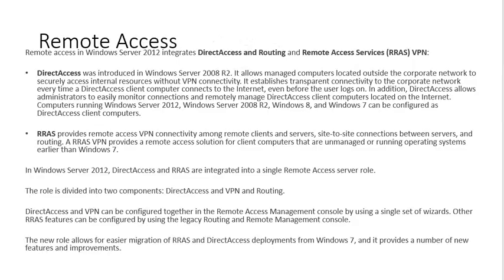For remote access in Windows Server 2012, DirectAccess and Routing and Remote Access Service (RRAS) VPN are integrated. DirectAccess was introduced in Windows Server 2008 R2, allowing managed computers located outside the corporate network to securely access internal resources without VPN connectivity. It establishes transparent connectivity to the corporate network every time a DirectAccess client computer connects to the internet, even before the user logs on. DirectAccess also allows administrators to easily monitor connections and remotely manage computers running Windows Server 2012.